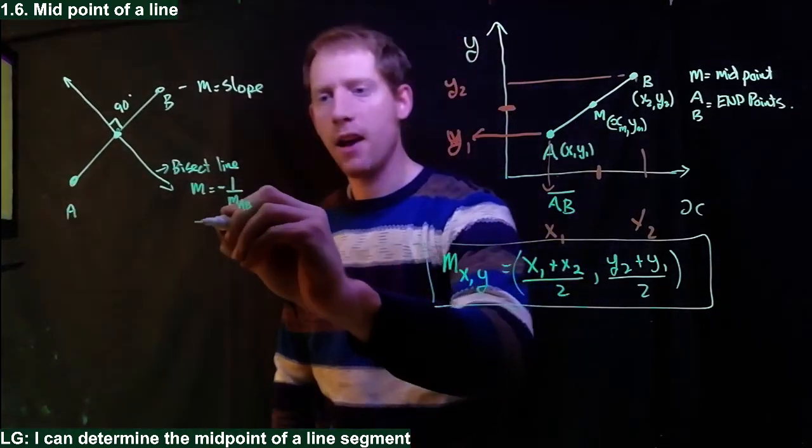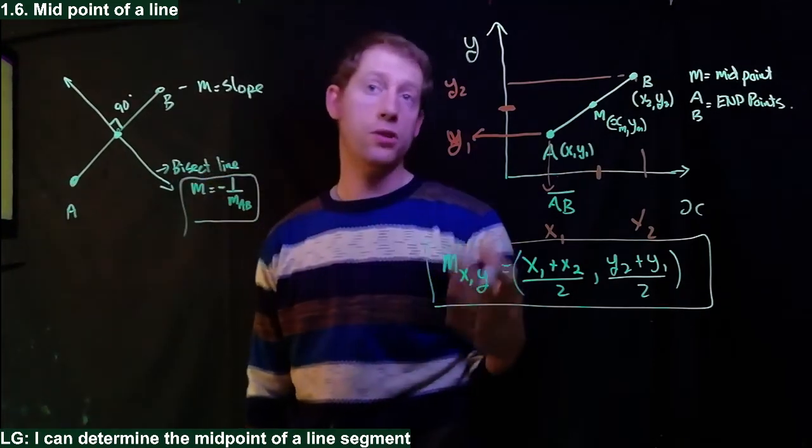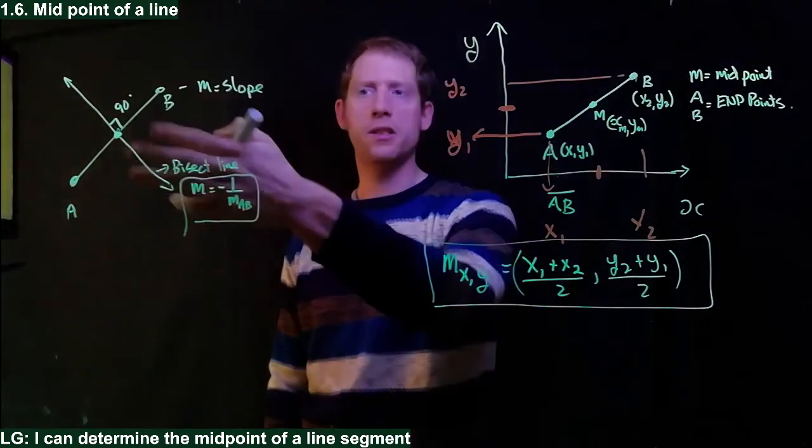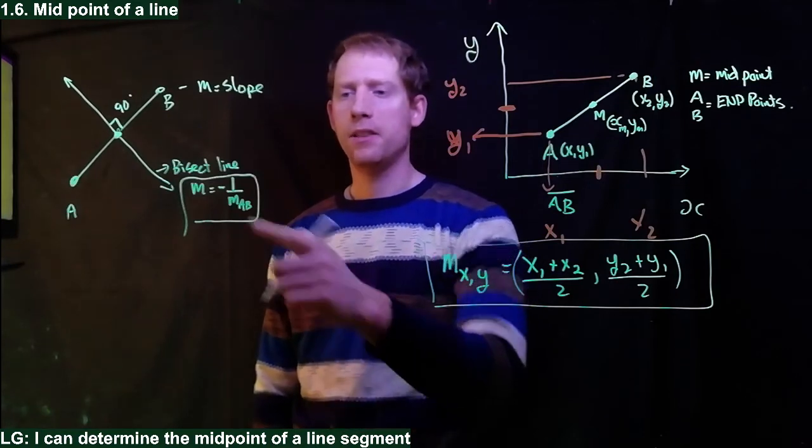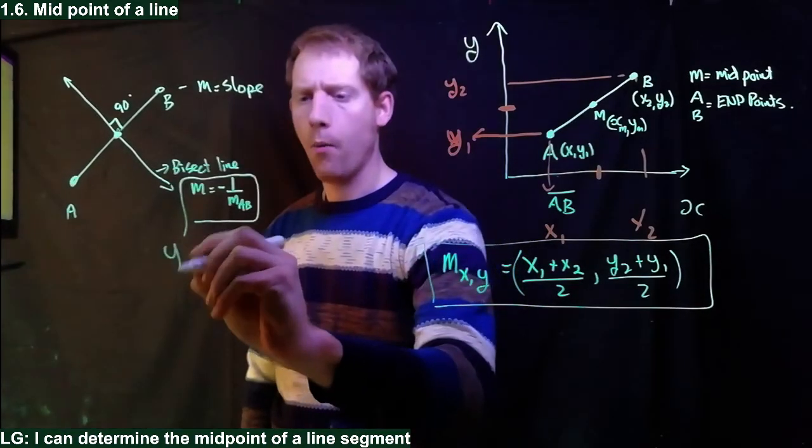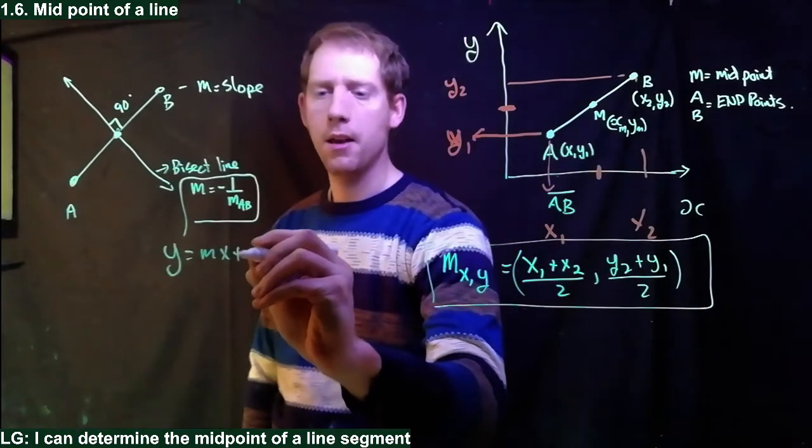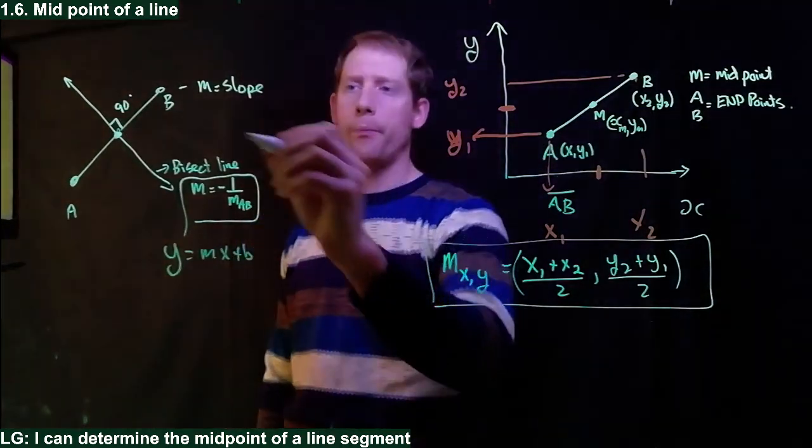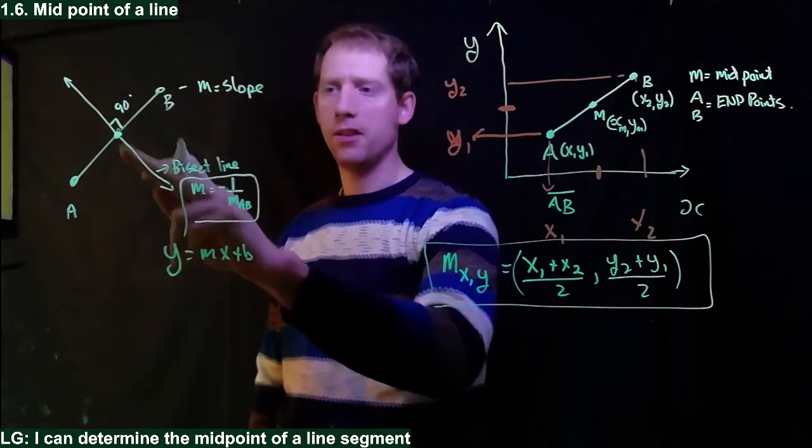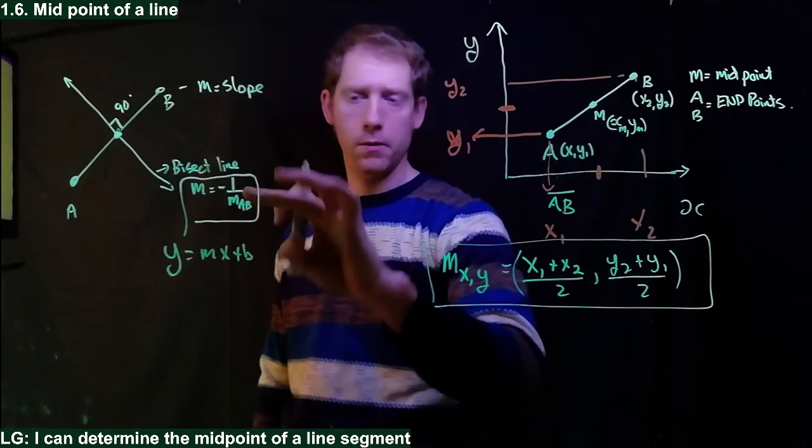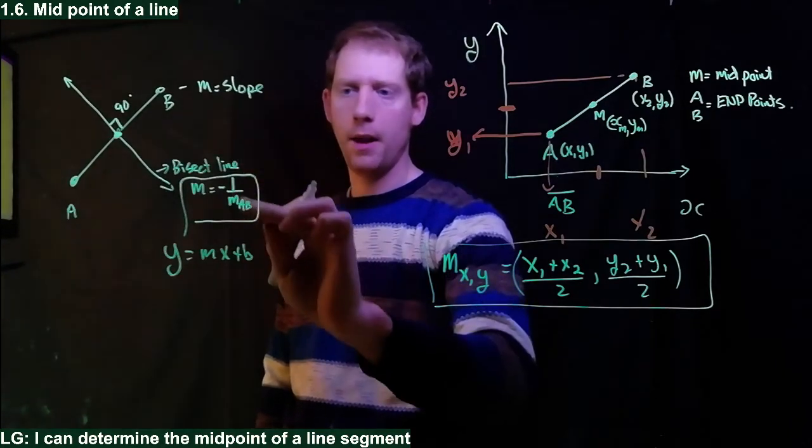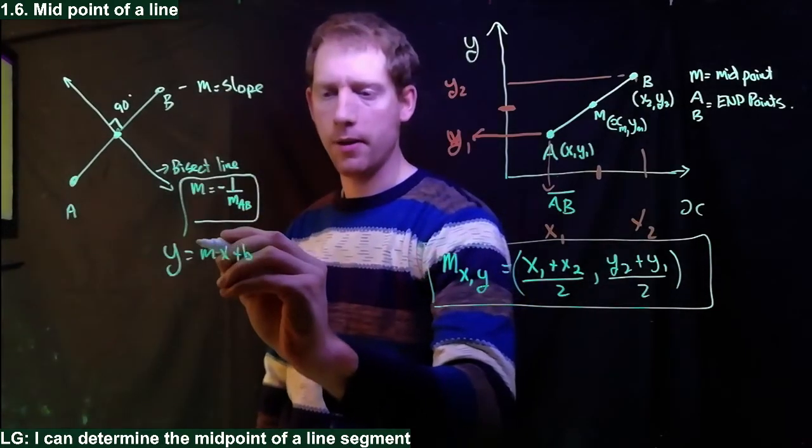And this is how you could use the midpoint - you can use midpoint to determine the bisect line. Because if I know y equals mx plus b, well if I know the slope here I could find the slope of this line by dividing one over this slope and then putting it negative, so I know this.